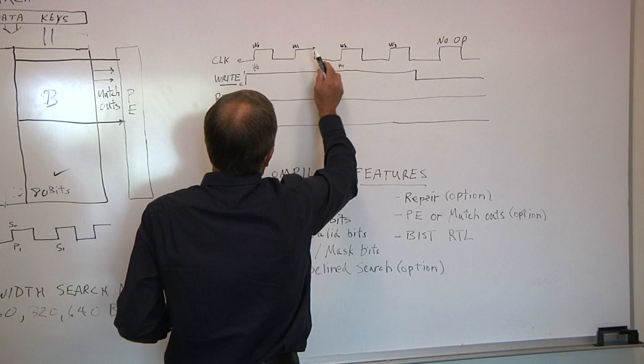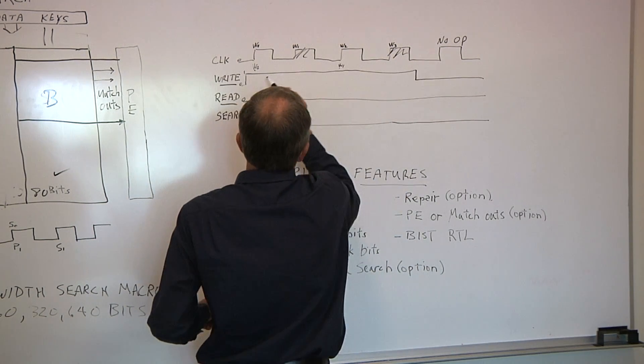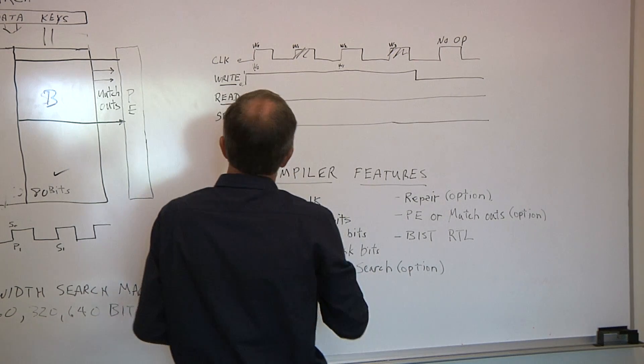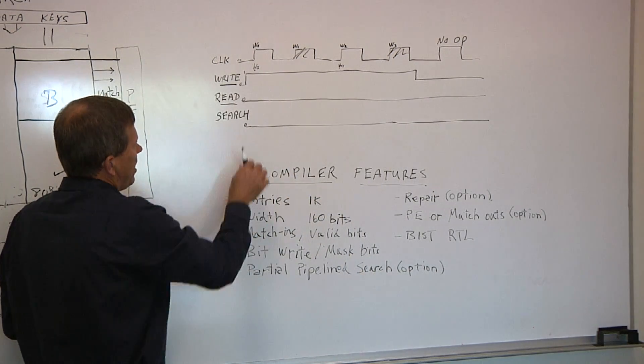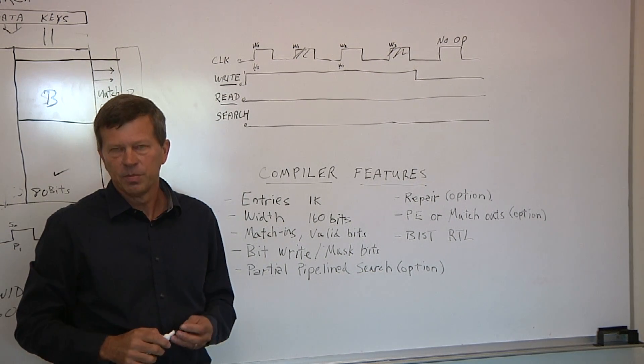So during this write, this would be a don't care, and that would be a don't care, and you end up with two writes in these two cycles. The search is still done on a cycle-by-cycle basis, and that is not effective whatsoever in any way or form.